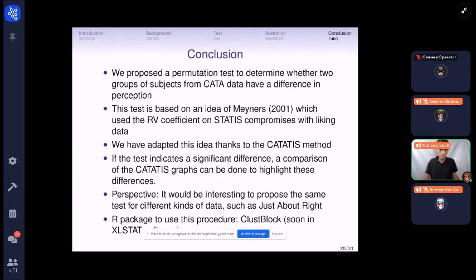As a conclusion, we propose the permutation test to determine whether the two groups of subjects from check-all-that-apply data have a difference in perception or not, clearly based on an idea of Michael Meyners, which proposed to use the RV coefficient and STATIS compromises. But this was in the case of liking data, so quantitative blocks. We have adapted this idea thanks to the CATATIS method and the Ochiai coefficient. If the test indicates a significant difference, a comparison of the CATATIS graphs can be done to highlight these differences and the user can see if this difference is interesting or not.